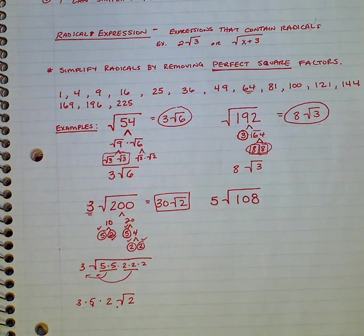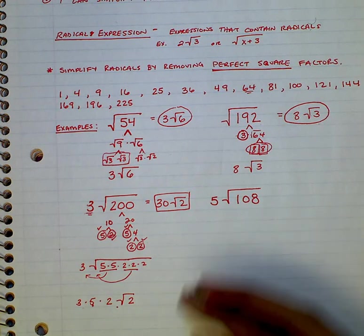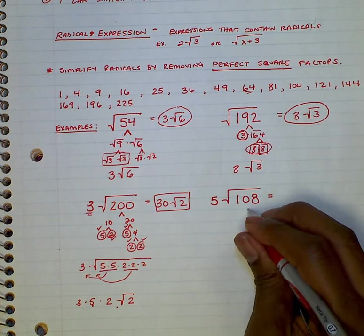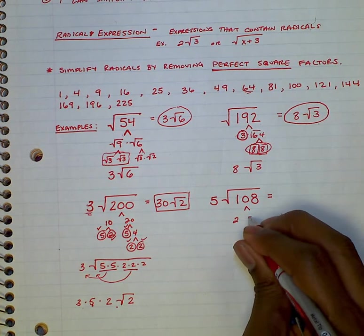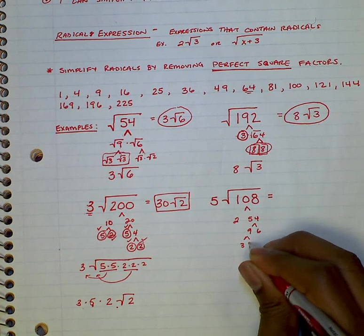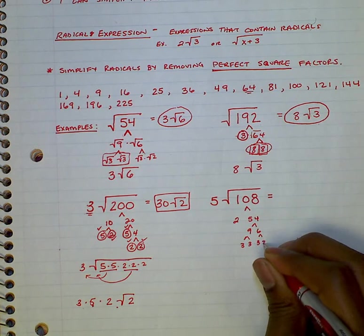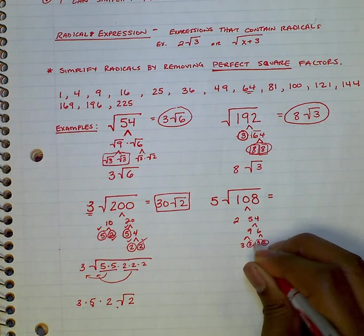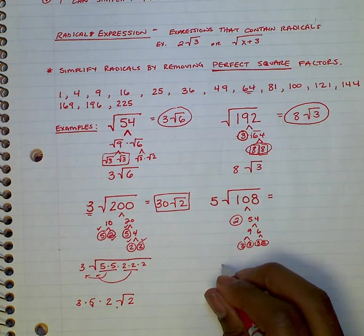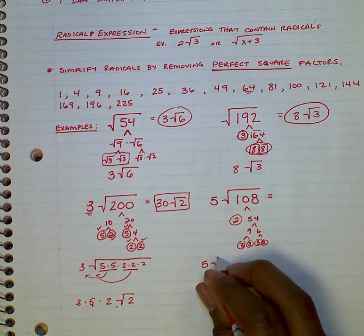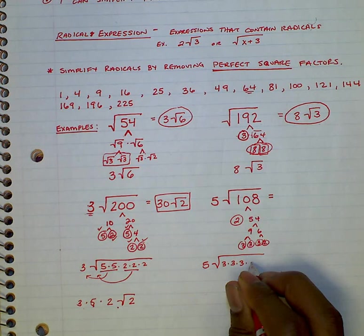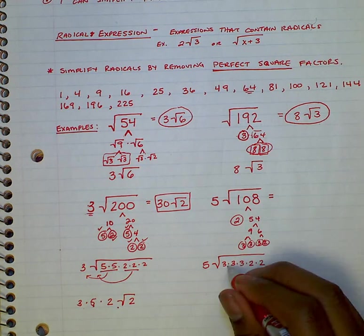If you haven't already, try to pause this and do it on your own and then see how your answer measures up against mine. So I have 5 and 2 and 54. 54 is 9 and 6. 9 breaks down to 3 and 3. 6 breaks down to 3 and 2. Prime, prime, prime, prime, prime. So outside I have 5. 3, 3, 3, 2, 2: 1, 2, 3; 1, 2, 3; 1, 2; 1, 2.